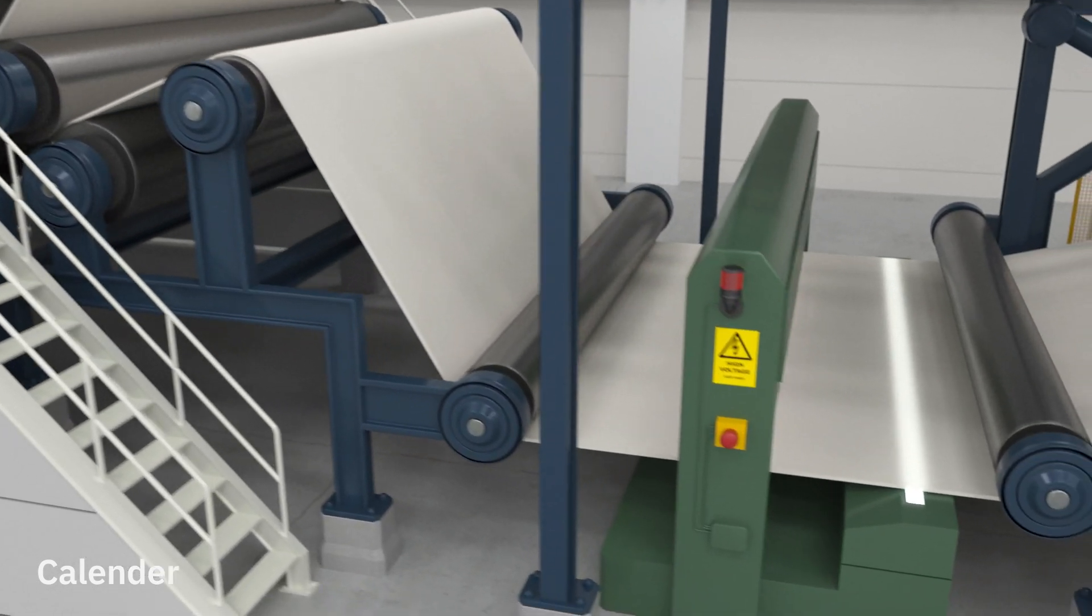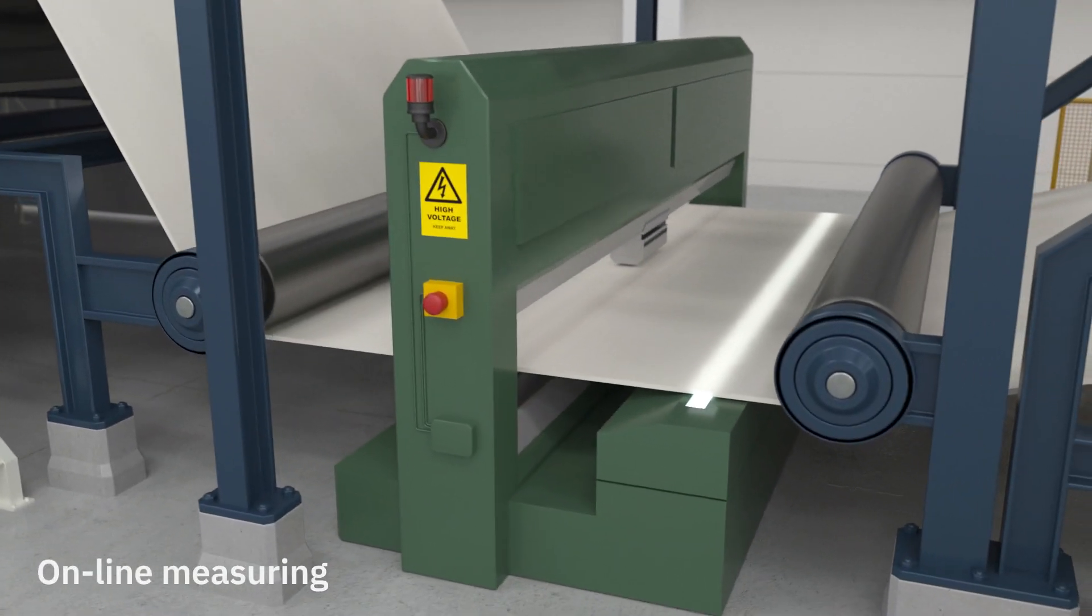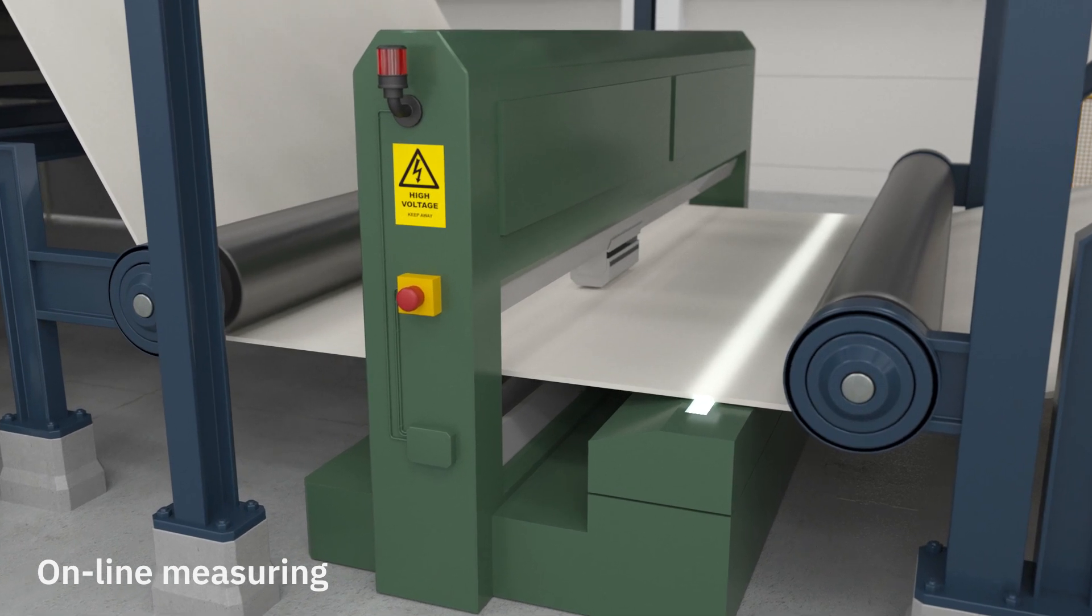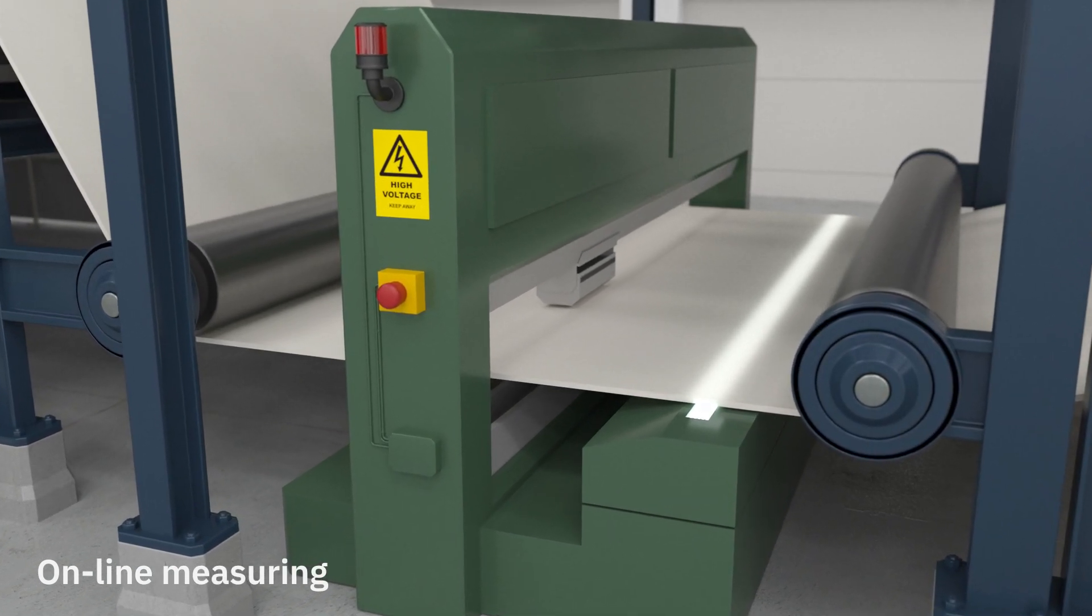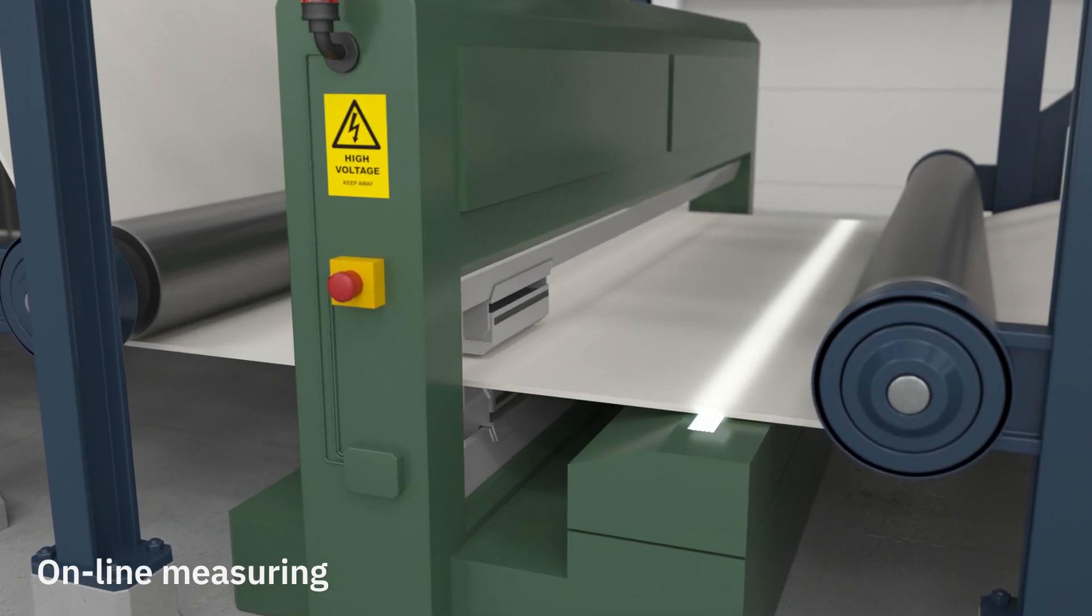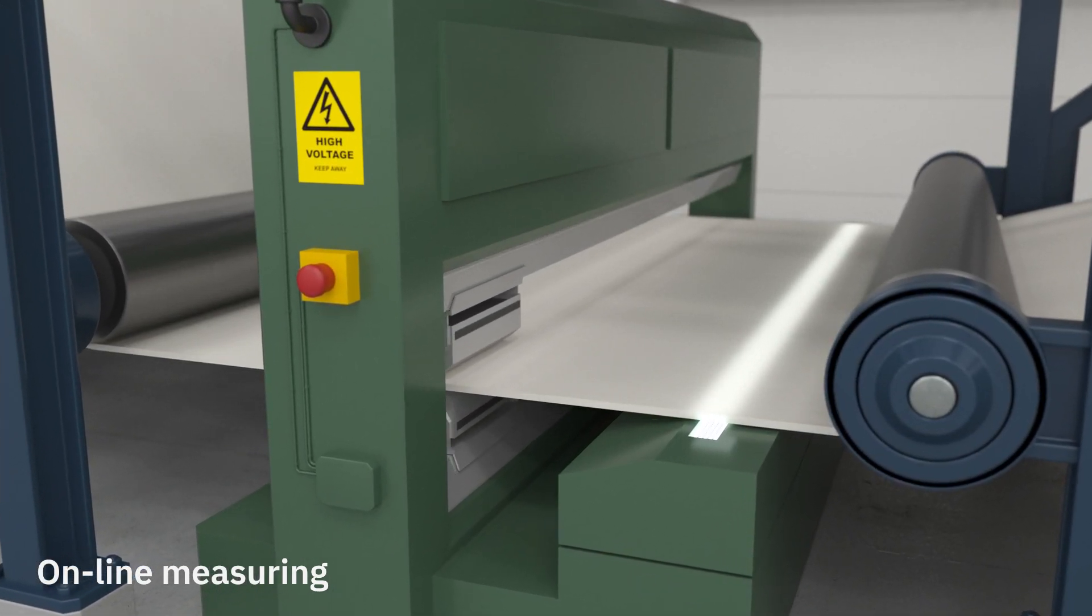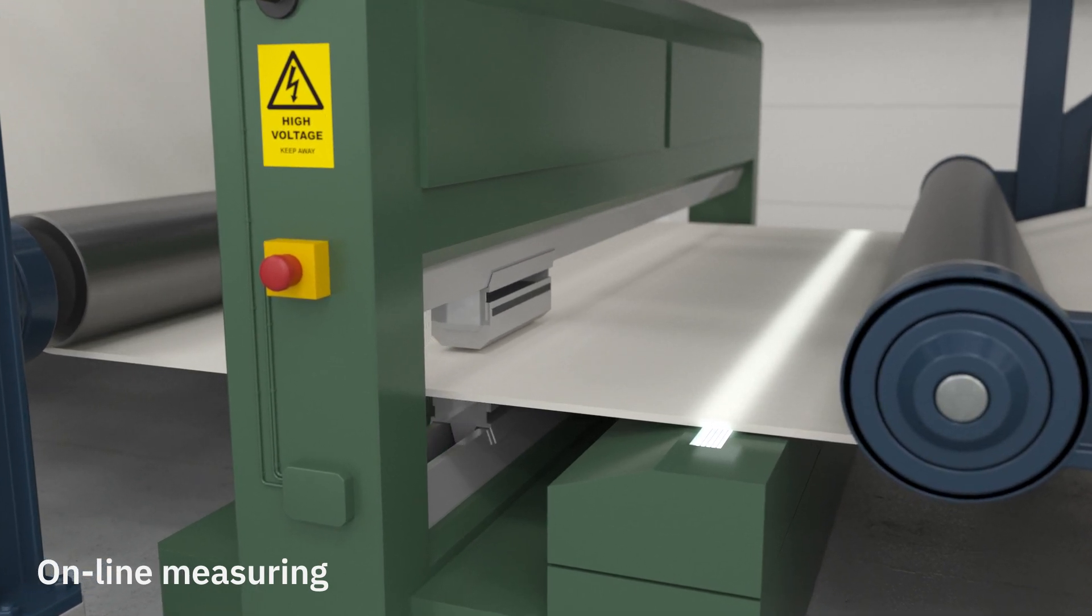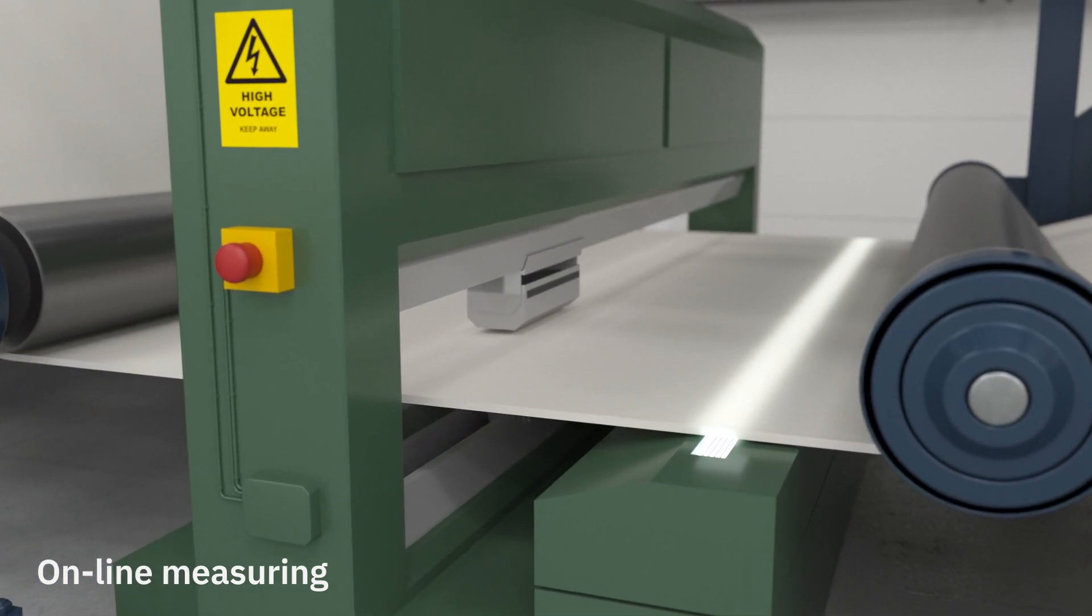To secure the right quality, the machine has an online measuring system, QCS, that measures brightness, grammage, caliper, shade and ash content both in cross-direction and machine direction. It takes around 30 seconds for the measuring head to move across the machine.